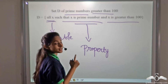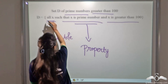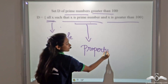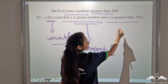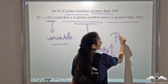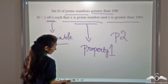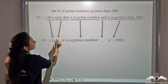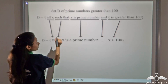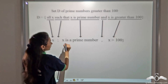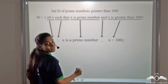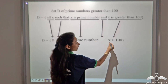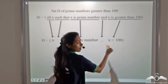So we will write both the properties in the answer. All x — that is the variable — such that x is a prime number. This is property 1, and x is greater than 100. This is property 2. So it will be written as: x, we use the colon for 'such that', then we write the property x is a prime number. We have two properties, so we will give a comma instead of AND, and then write the second property x is greater than 100.